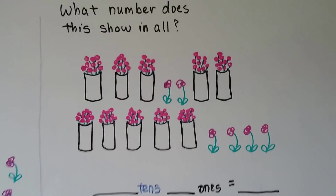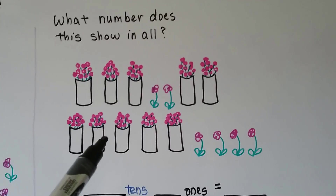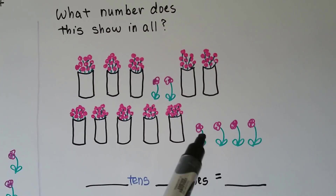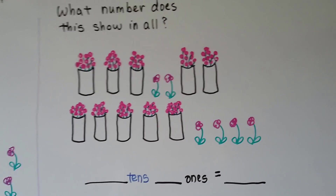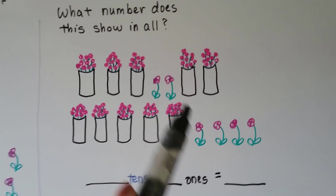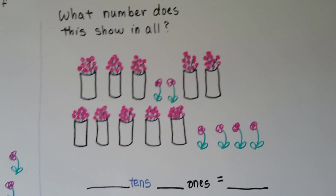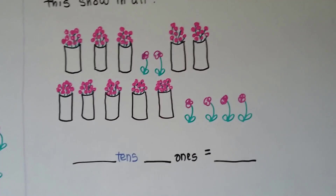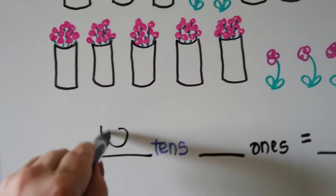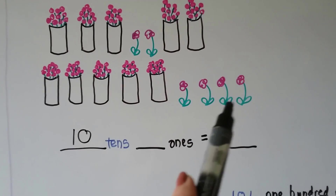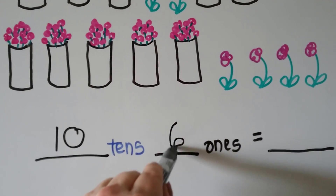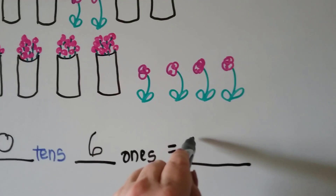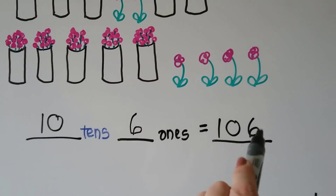What number does this show in all? We have vases with ten flowers in them, but then we have flowers that are separate. Some are over here, some are over here, but they're still ones. Even if they're spread around, we still have one, two, three, four, five, six ones. How many tens do we have? One, two, three, four, five, six, seven, eight, nine, ten tens. We have ten tens and six ones — we have one hundred six.